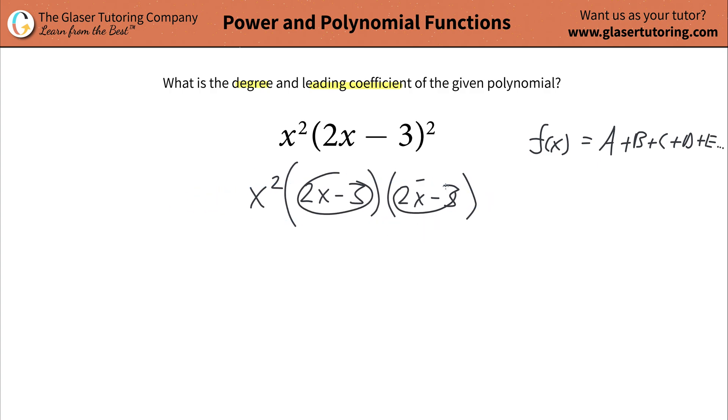Now, you might look at this and say, oh, I know what to do. We can now begin to FOIL. So we're going to take the first and multiply it by the first of the second term. So we take the 2x, multiply it by the 2x, and that's going to be 4x squared. Then we're going to take the 2x and multiply it by the negative 3, and that's going to become negative 6x.